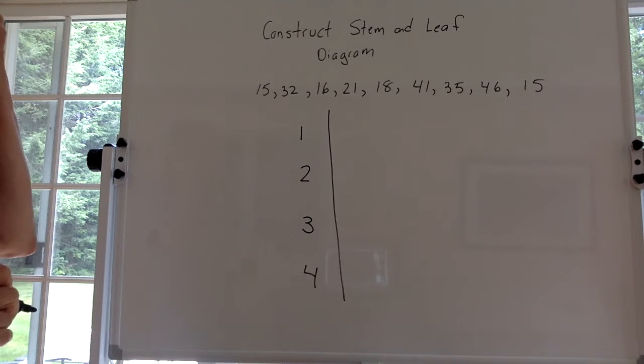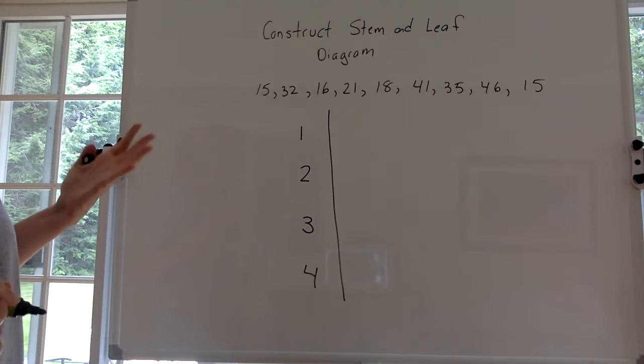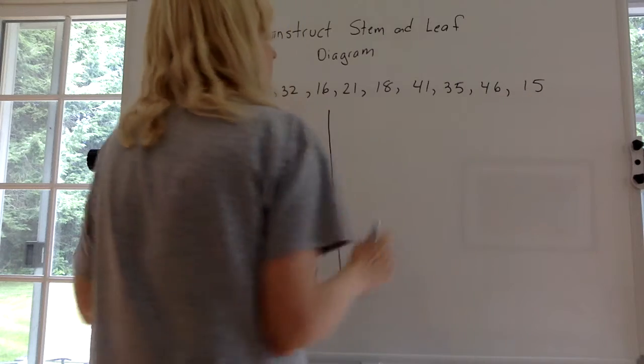Now we have to look at the 10s. How many numbers do we have which start with a 1? We have 15, 16, 18, 15. We have four of them.